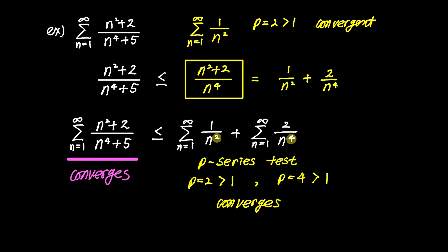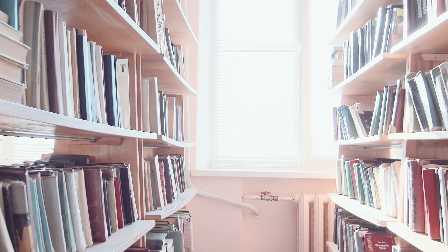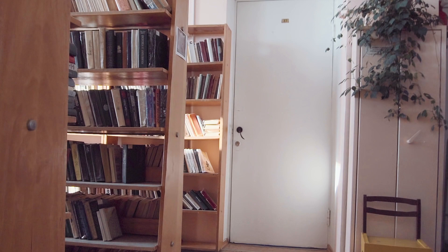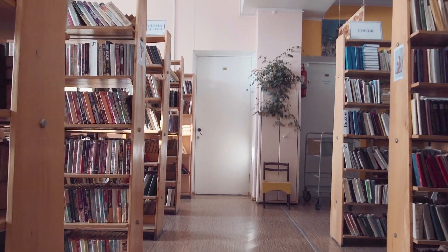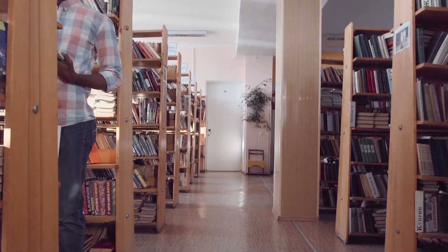To apply the direct comparison test, you first need to identify a comparable sequence. If the sum of that sequence converges, find a larger sequence for comparison. Conversely, if the compared sequence diverges, find a smaller one. This process helps determine whether the given series converges or diverges. If today's video has been helpful, please like and subscribe. I look forward to seeing you in the next video. Thank you for watching — I've been your Math Guardian, Alex.